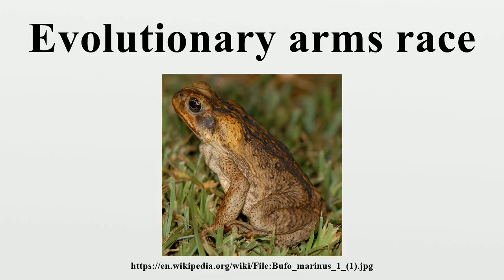Predator whelks use their own shell to open the shell of their prey, oftentimes breaking both shells in the process. This led to higher fitness of larger-shelled prey, which became more selected for through generations. However, the predator population selected for those more efficient at opening larger-shelled prey. This is an excellent example of an asymmetrical arms race because while the prey is evolving a physical trait, the predators are adapting in a much different way.